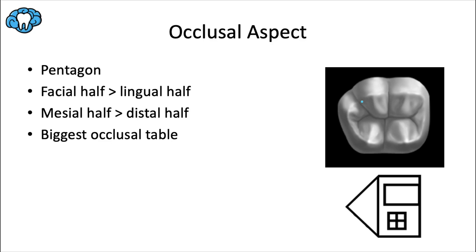The maxillary first molar had three lingual cusps including the cusp of Carabelli, whereas the mandibular first molar has three facial cusps — just the opposite. By that token, this tooth converges toward the lingual, the opposite of the maxillary first molar, so the facial half is larger than the lingual half. However, similar to the maxillary first molar, the mesial half is wider than the distal half, meaning the tooth also converges toward the distal. This is the biggest occlusal table in the entire mouth, so most chewing occurs on this tooth.